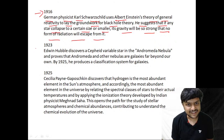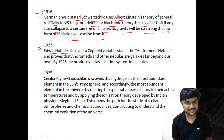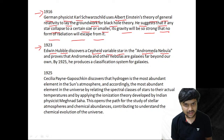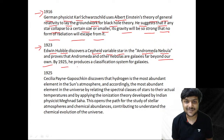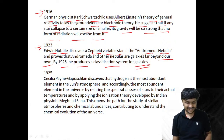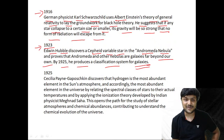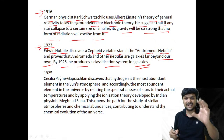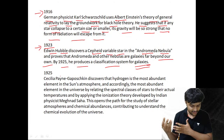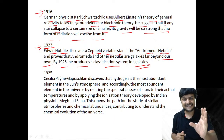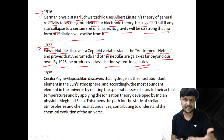In 1923, Edwin Hubble discovers Cepheid variable stars in the Andromeda nebula and proves that Andromeda and other nebulas are galaxies far beyond our own. In 1925 he produces the classification of galaxies. Cepheid variables were used as standard candles — just like Vega for magnitude — to measure the distances to these galaxies.